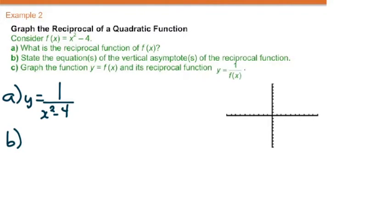Part B, vertical asymptotes. The process doesn't change, we still take the denominator, x squared minus 4, and make it equal 0.